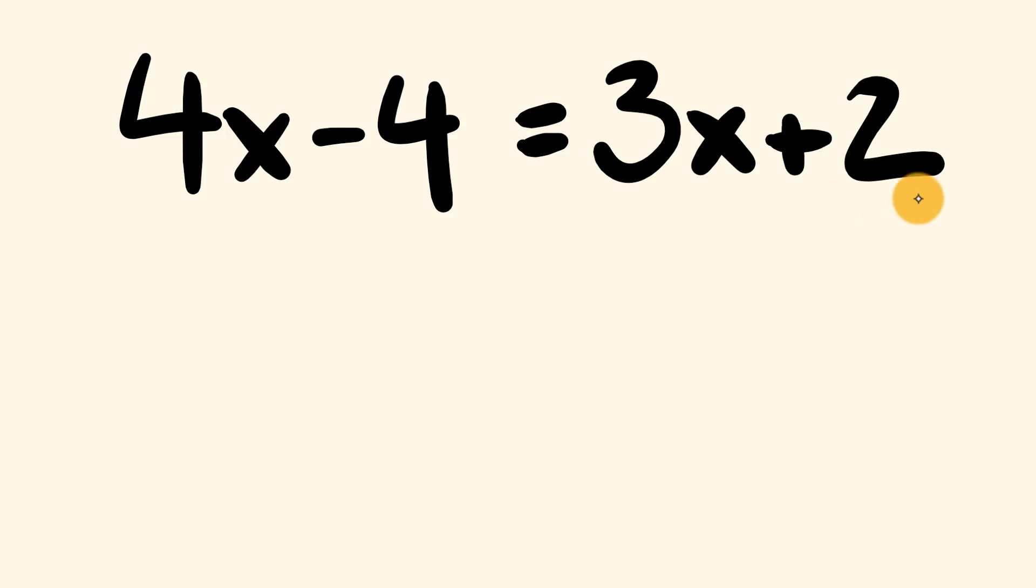So to do that what we do is first off we're going to get rid of this 3x here by subtracting it away. So we subtract 3x from the right hand side here we get rid of it, but what we do to the right we have to do to the left to keep everything equal. So we subtract 3x from the left hand side here.